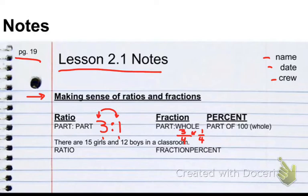So for instance, here's my first of two example problems. There are 15 girls and 12 boys in a classroom. What would this be as a ratio, a fraction, and a percent? Well, remember, a ratio is part-to-part. So the ratio of girls to boys is going to be 15 to 12, where we have girls, we have boys.